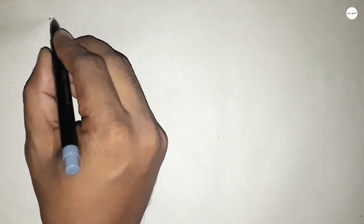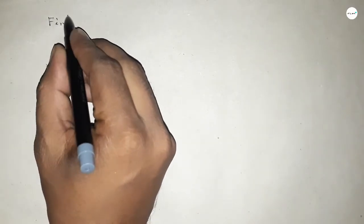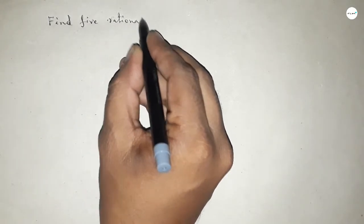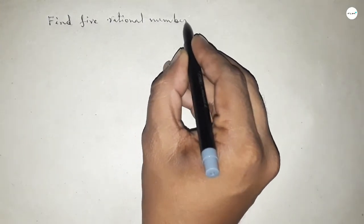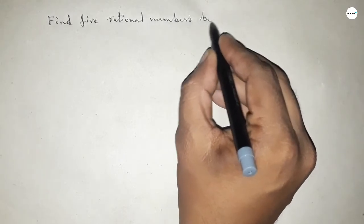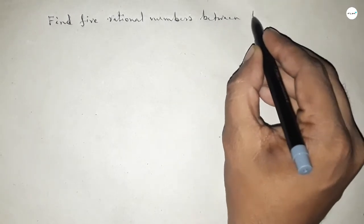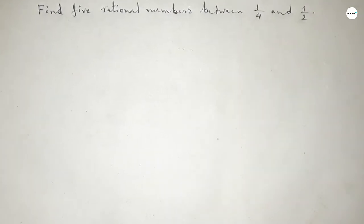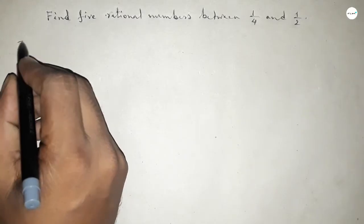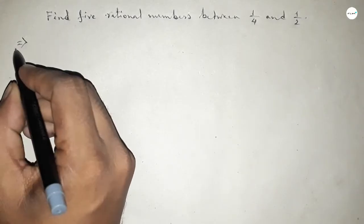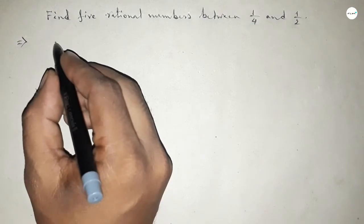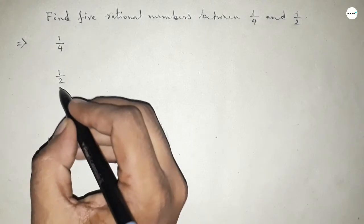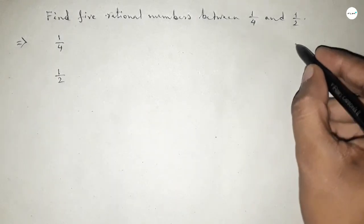Hi everyone, welcome to SHR Classes. Today in this video we have to find 5 rational numbers between 1 over 4 and 1 over 2. So let's start the video. First of all, write down here the given numbers: 1 over 4 and 1 over 2.